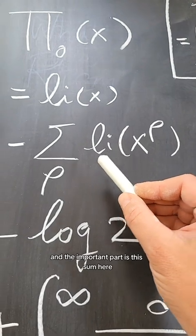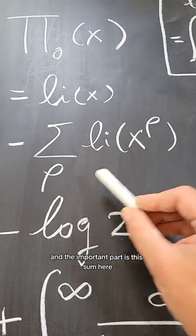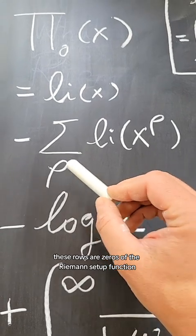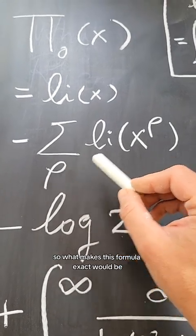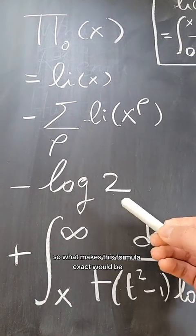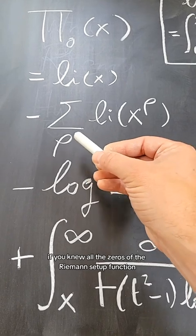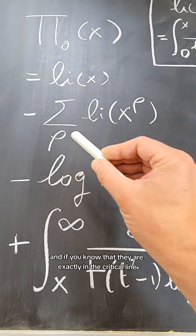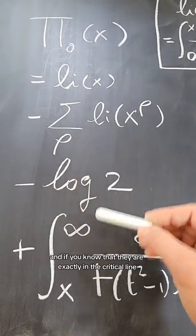And the important part is this sum here. These rows are zeros of the Riemann zeta function. So what makes this formula exact would be if you knew all the zeros of the Riemann zeta function. And if you know that they are exactly in the critical line,